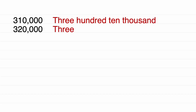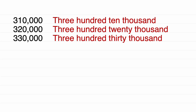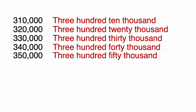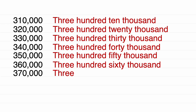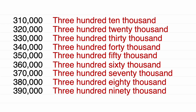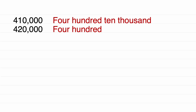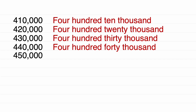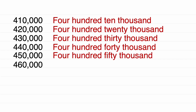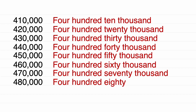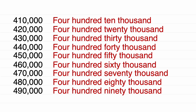320,000. 330,000. 340,000. 350,000. 360,000. 370,000. 380,000. 390,000. 400,000. 410,000. 420,000. 430,000. 440,000. 450,000. 460,000. 470,000. 480,000. 490,000. 500,000.